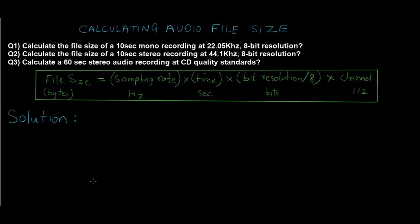As you can see on the screen, we have three different questions that we are going to be solving today. The first question is: calculate the file size of a 10-second mono recording at 22.05 kilohertz and 8-bit resolution. The formula for calculating these types of problems is: file size in bytes = sampling rate (Hz) × time (seconds) × bit resolution ÷ 8 × channels. The channel value is 1 for mono and 2 for stereo.